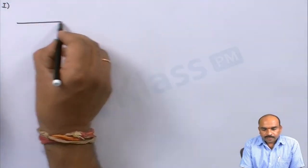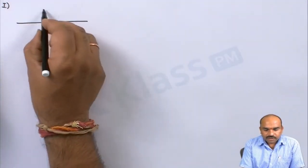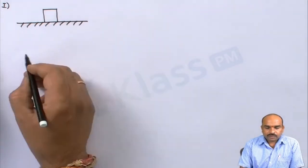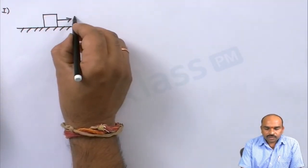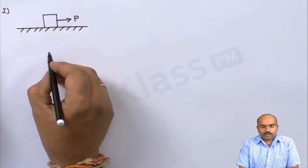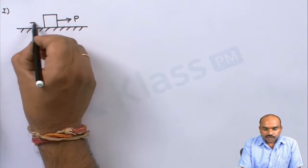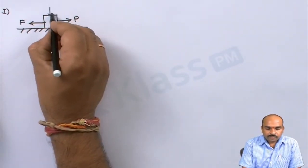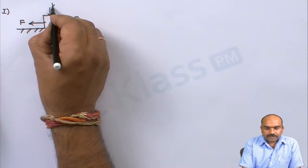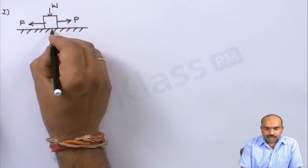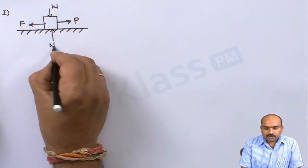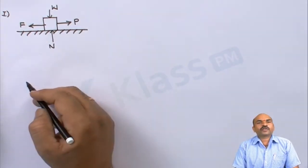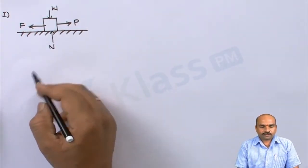The first case is a body resting on an inclined plane, with force applied horizontally. The friction force acts in the opposite direction, weight acts downward, and normal reaction acts upward. We have to write the horizontal equation and the vertical equation.